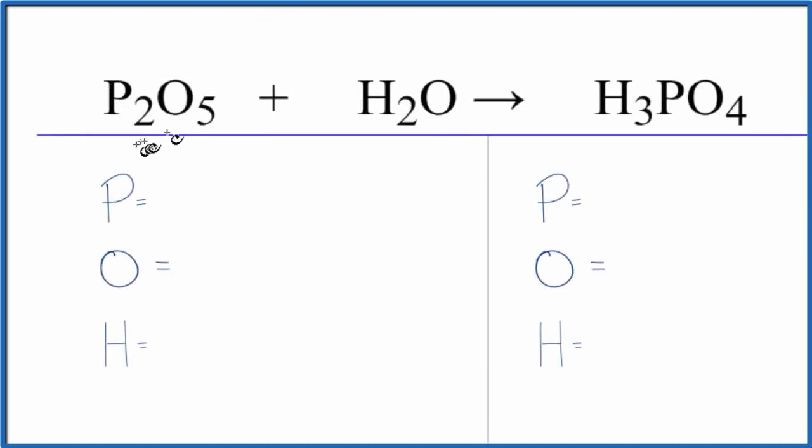To balance this equation we have P2O5 plus H2O and that gives us phosphoric acid. This is a combination reaction. These two things are coming together to form this new substance. Let's count the atoms up and balance the equation.